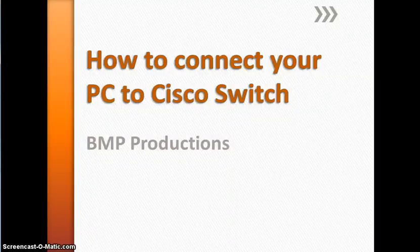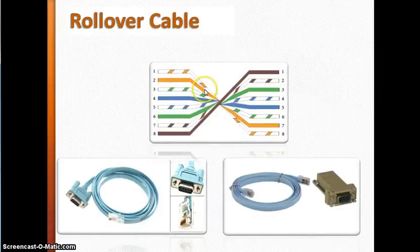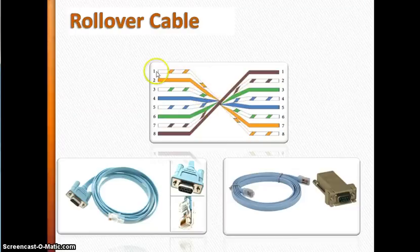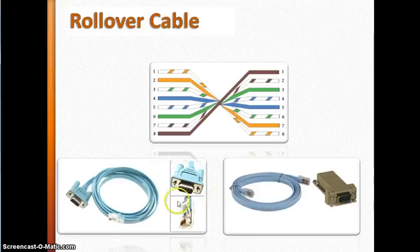This video is about how to connect your PC to a Cisco switch. First, you need a rollover cable. This is the connection diagram for the rollover cable: pin number one goes to pin number eight, pin number two goes to pin number seven, pin number three goes to pin number six, and so on.